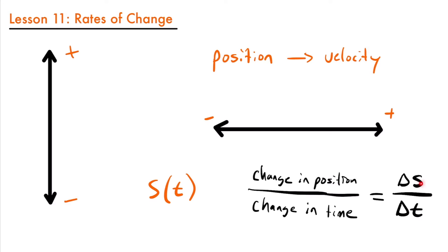Just like slope gives us the average rate of change between two points on a graph, this gives us the average rate of change, or the average velocity, between two points in time for a moving object. Let's take a look at an example.